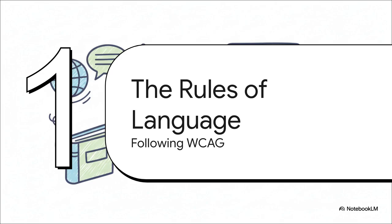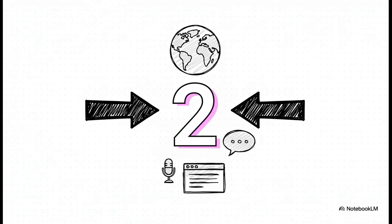We don't have to guess. We follow the rules laid out in the Web Content Accessibility Guidelines — you'll often hear it called WCAG. It's basically the official playbook for making the web accessible to everyone, and it covers language. When it comes to language, WCAG boils it all down to two simple but really powerful rules.